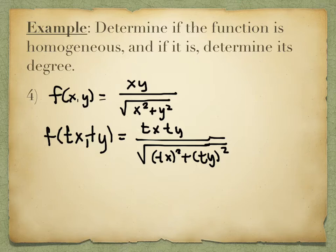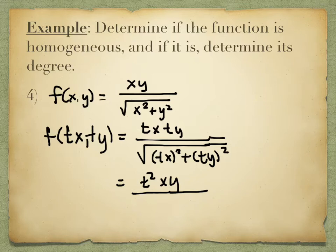In terms of cleaning things up, let's start with the numerator. We can write the numerator as t² times xy. That's a good first step toward recognizing whether we can factor that t value out in front and leave the original part — xy — by itself. For the denominator, we can square each piece individually: t²x² plus t²y².